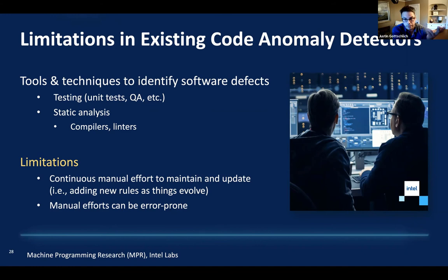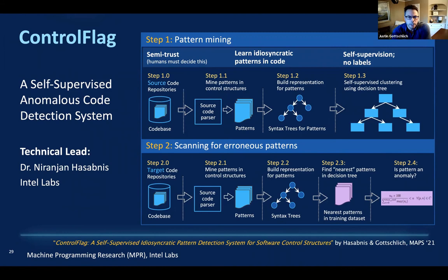Because of these limitations, we built ControlFlag. ControlFlag detects anomalous code. You have a high-level overview of the system here — if you want to read more, check out our MAPL 2021 paper written by myself and my colleague Dr. Neerajan Haspinis. The higher-order bit with ControlFlag is this: one, it's self-supervised, so it doesn't require any labels to do its learning.